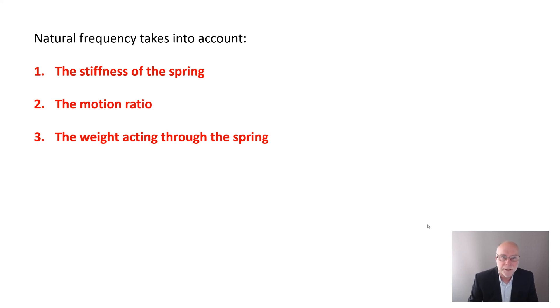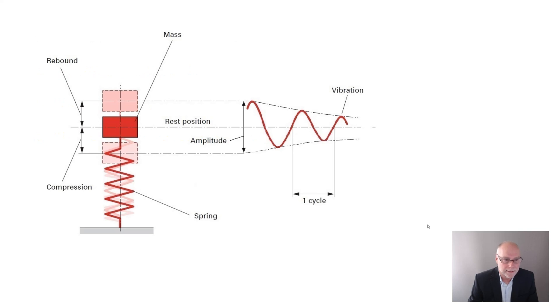It's best illustrated by a diagram like this. Now, here we have a spring here, vertically aligned. We have a weight that's placed on top of the spring, and then we push down on the weight and we let go. And what happens is the weight bounces up and down on the spring at what is called the system's natural frequency.